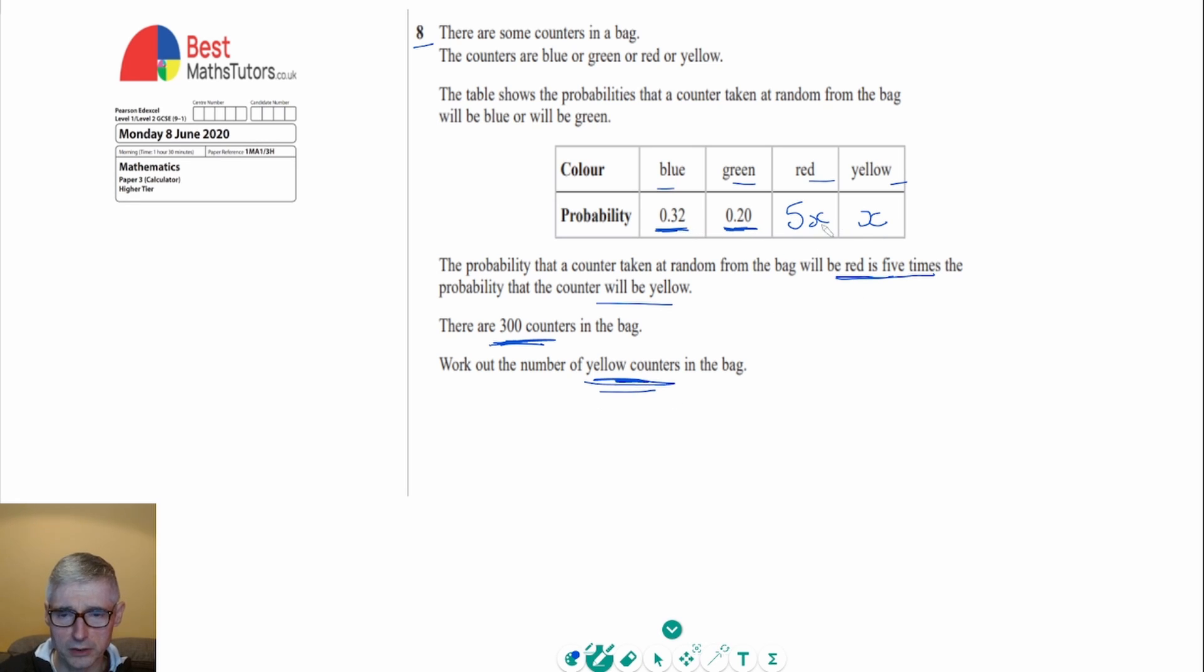And the best thing we can do is actually know that if we added up this row, it's going to equal one, because all probabilities, if we add up all the probabilities of all the possible outcomes, then it would make one. So we can see that we've got 0.32 plus 0.20 plus 5x plus x is actually equal to one. And I'm just going to tidy this up a bit. 0.32 plus 0.20 makes 0.52, and we've got 5x plus x is going to make plus 6x equals one. So we can see we've got an equation here that we can try and solve.